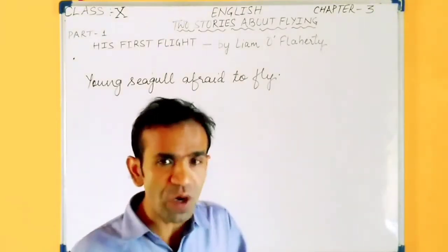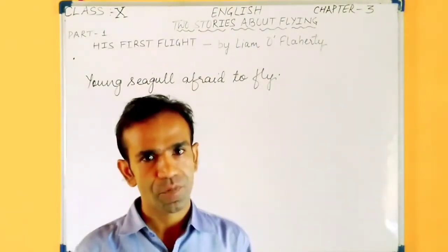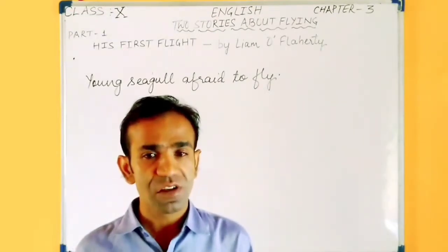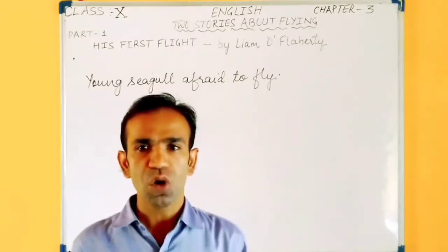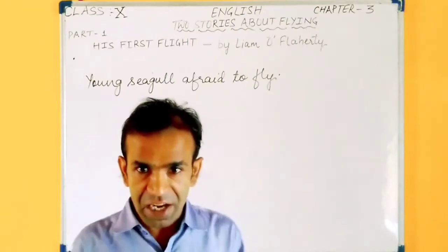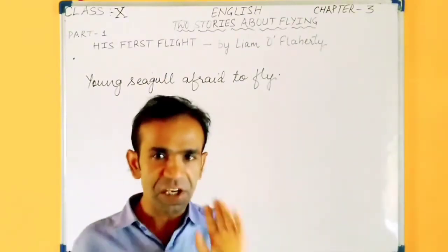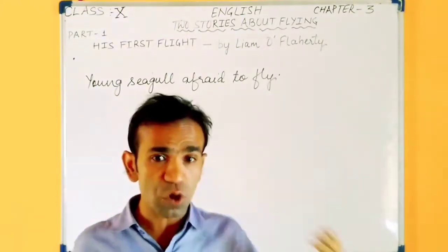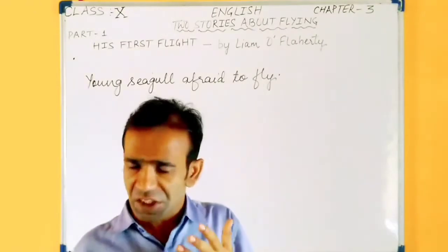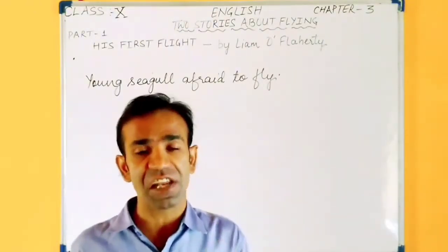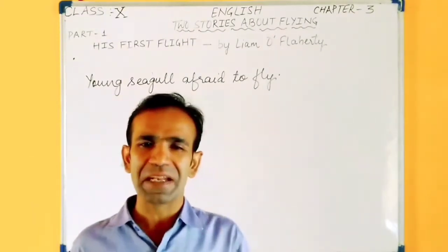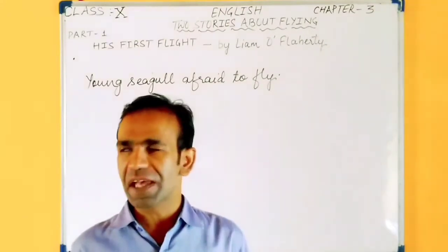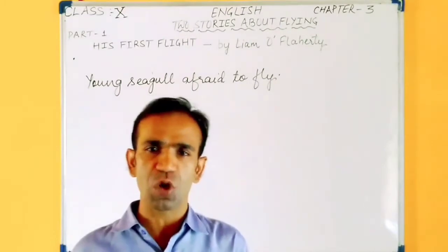He had taken a little run forward and tried to flap his wings, but that was all he could do. He couldn't fly; he became very afraid. He felt that his wings could not support him, so he ran back to the little hole where he slept at night. His brothers and sister had wings far shorter than his own, but he failed to muster up courage and fly. His parents taunted, scolded him, and threatened to leave him starving at the ledge unless he flew away, but nothing could make him fly.